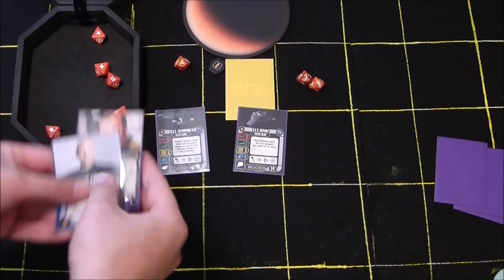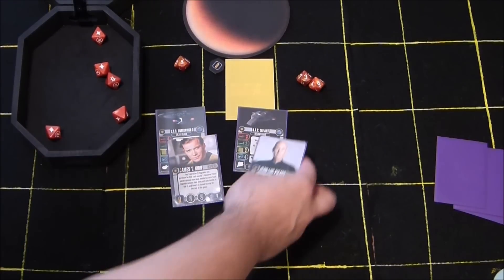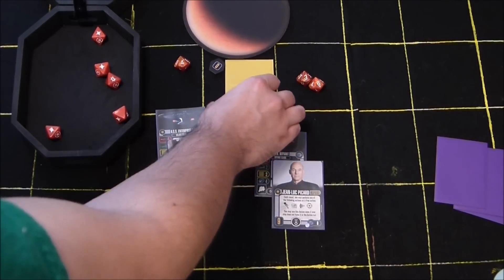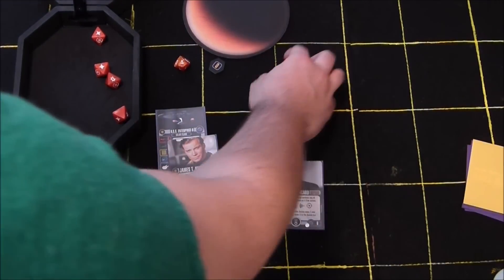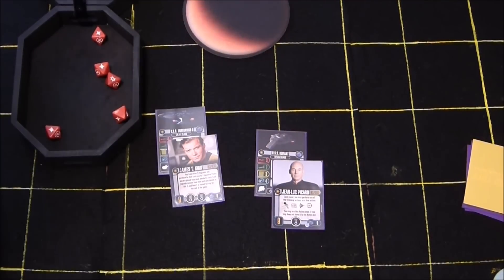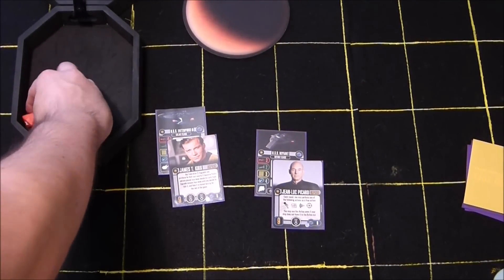Any extra captains you have will be placed underneath a ship card and will be counted only for points for the opponent if that ship gets destroyed. The victorious player will also set up the battle area as they see fit, starting with the planet token and then the ships of both himself and his opponent.